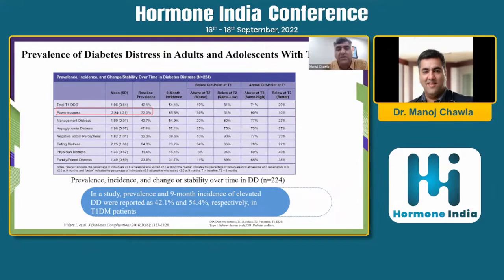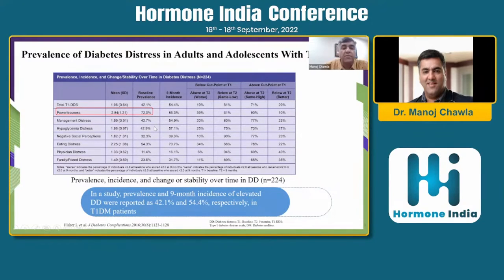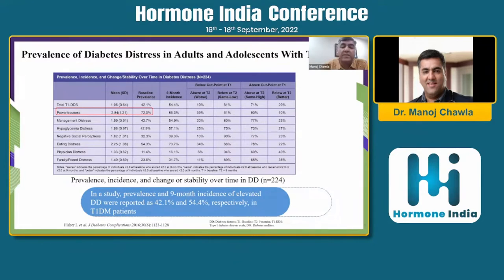Looking at the prevalence of diabetes distress in adults with Type 1 diabetes: feeling powerless is reported in as high as 72% of Type 1 patients. Distress related to managing their disease was reported in 42%, hypoglycemia worry in about 43%, and negative social perceptions in 33%. Overall distress is noted in about 54%. In one study, the prevalence and nine-month incidence of elevated diabetes distress were reported as 42% and 54% respectively in Type 1 diabetes patients.